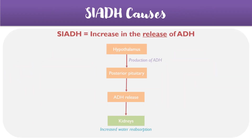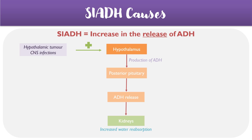Moving on to the condition itself, SIADH refers to an increase in the release of ADH into the blood, and there can be multiple causes behind this. For example, there could be hypothalamic causes, such as a tumour or CNS infections, which directly increase the production of ADH.